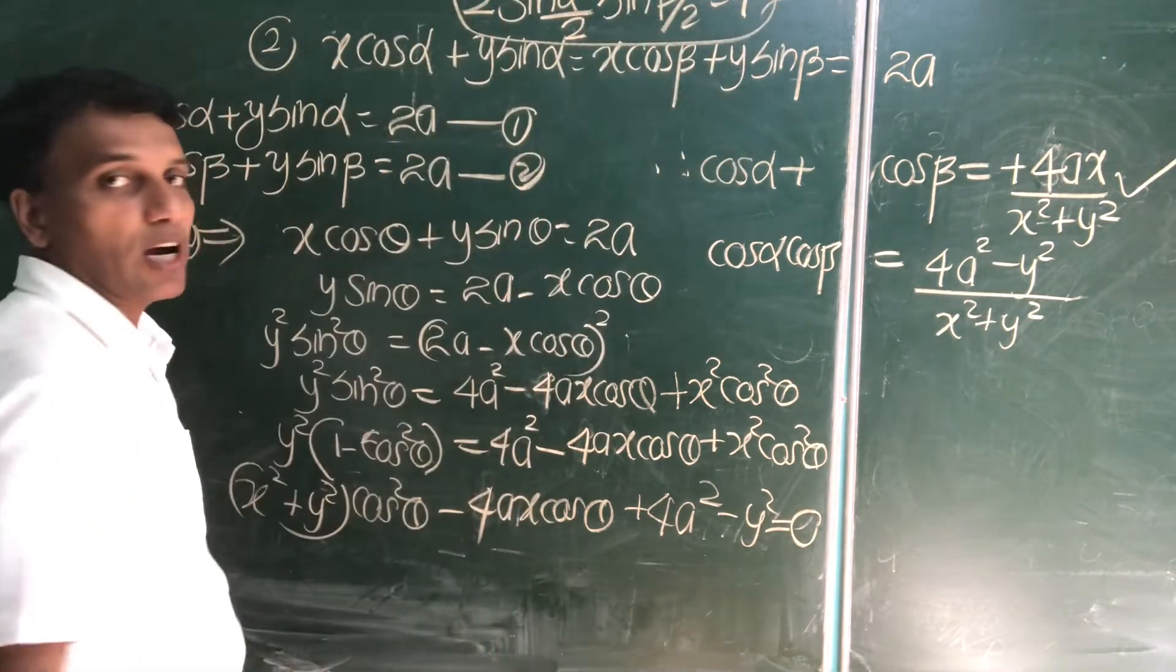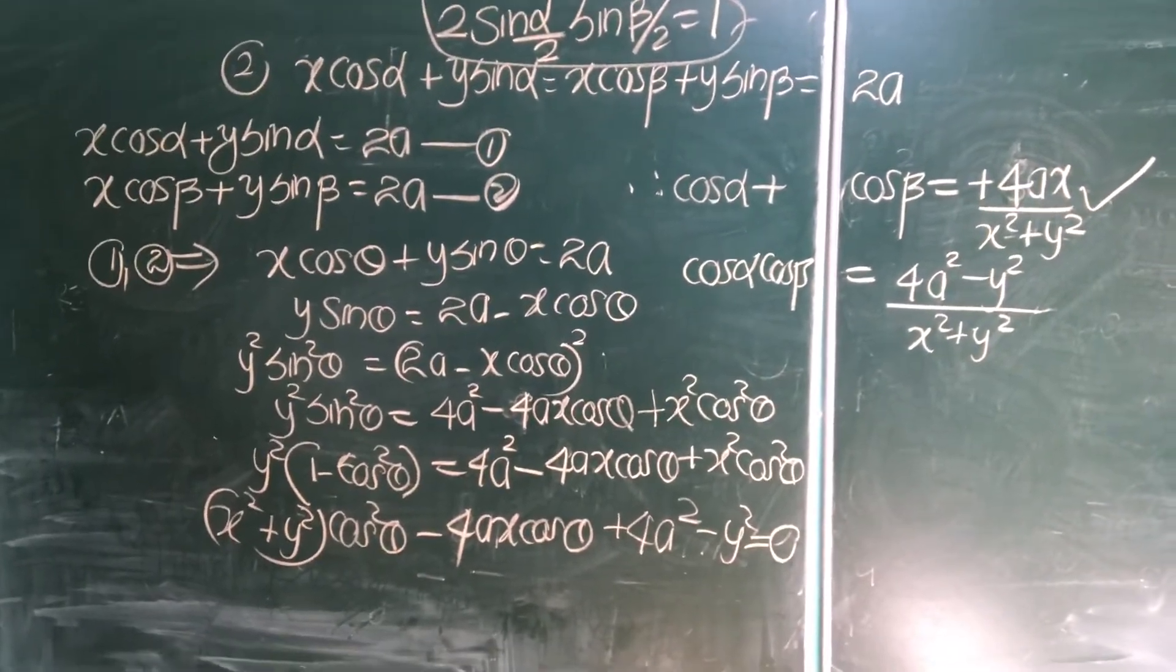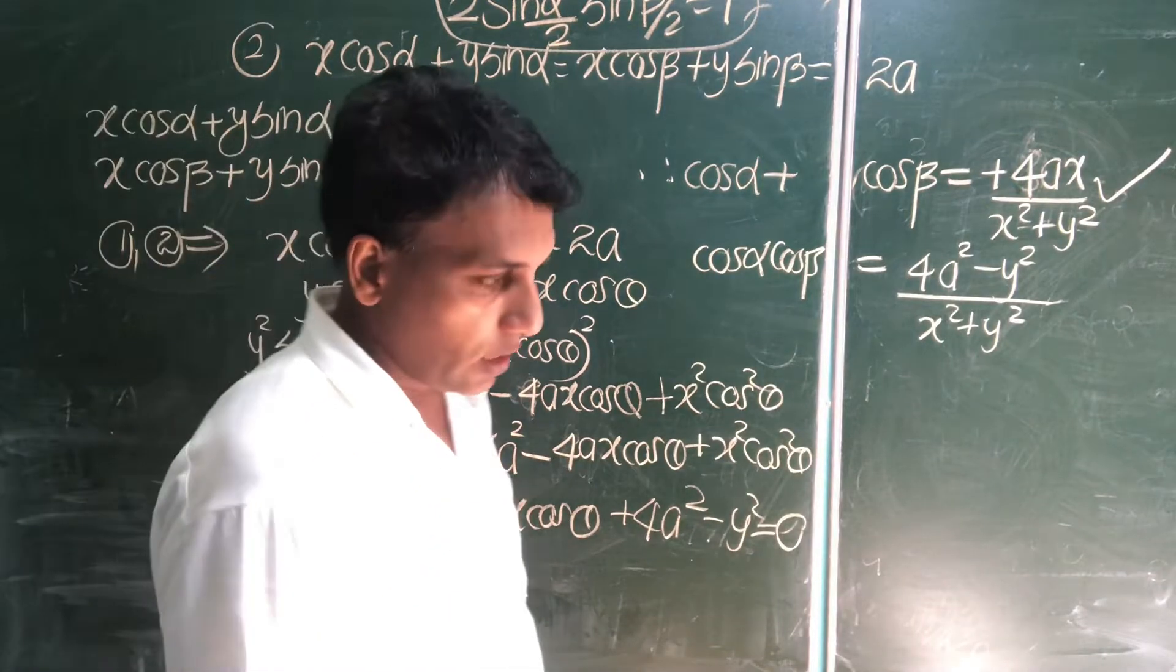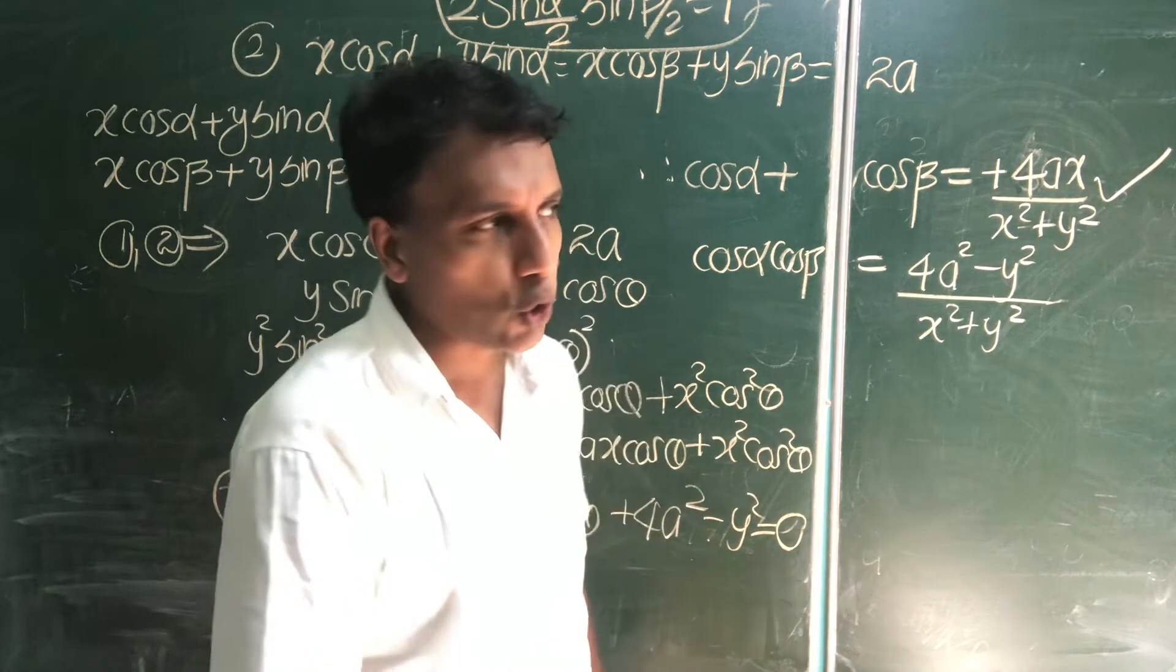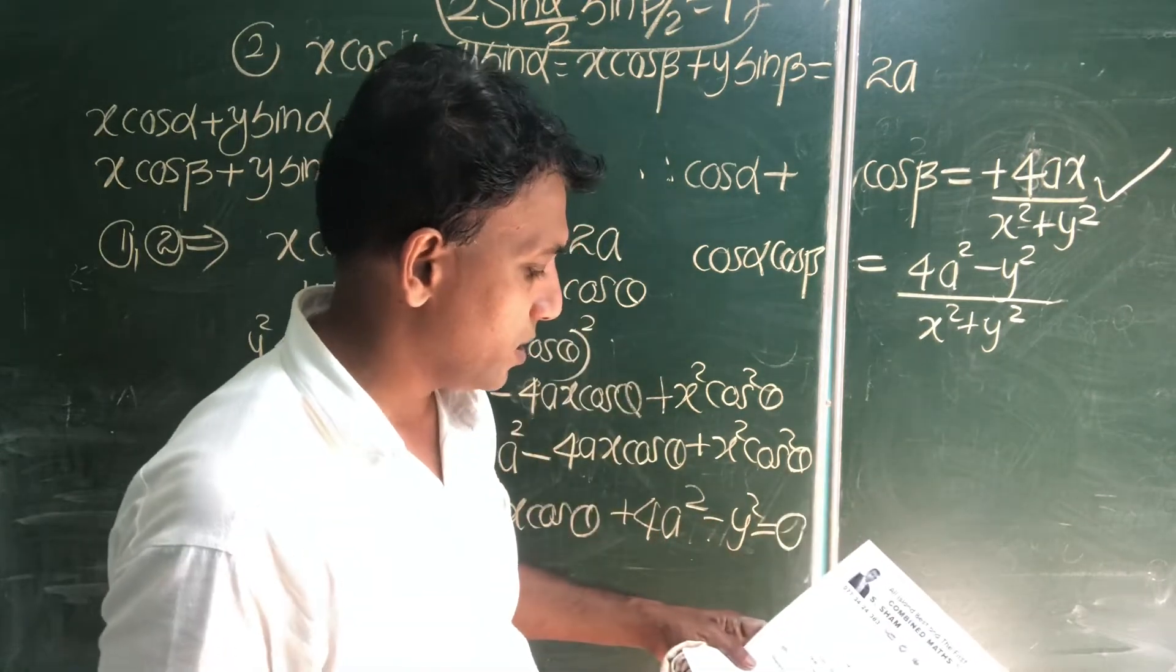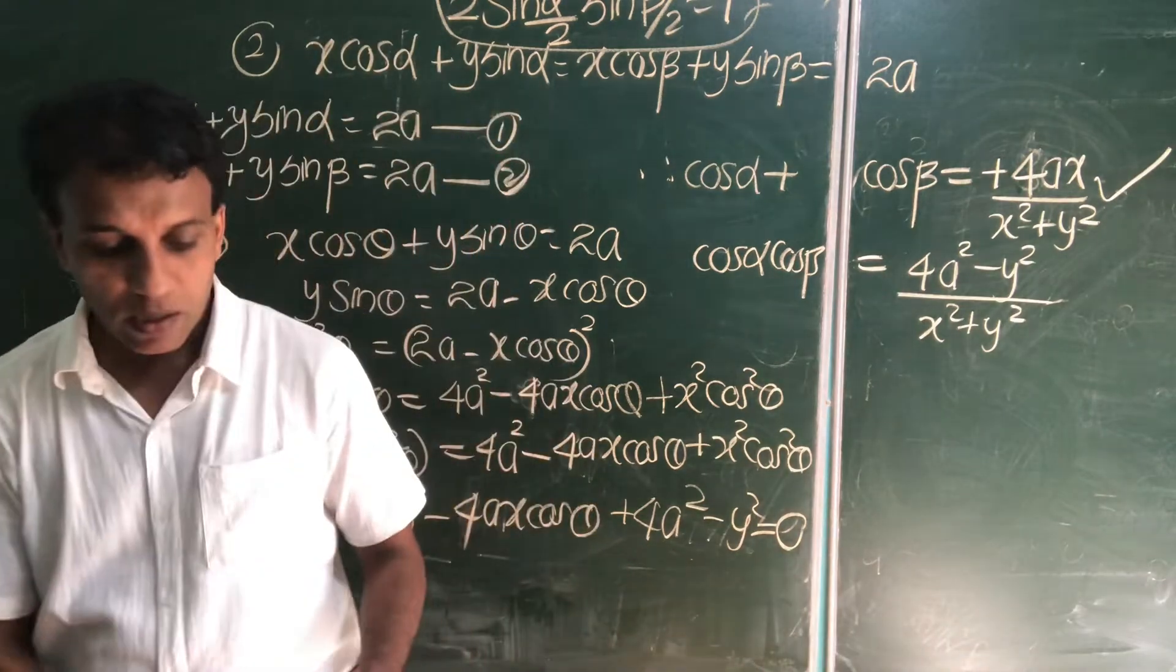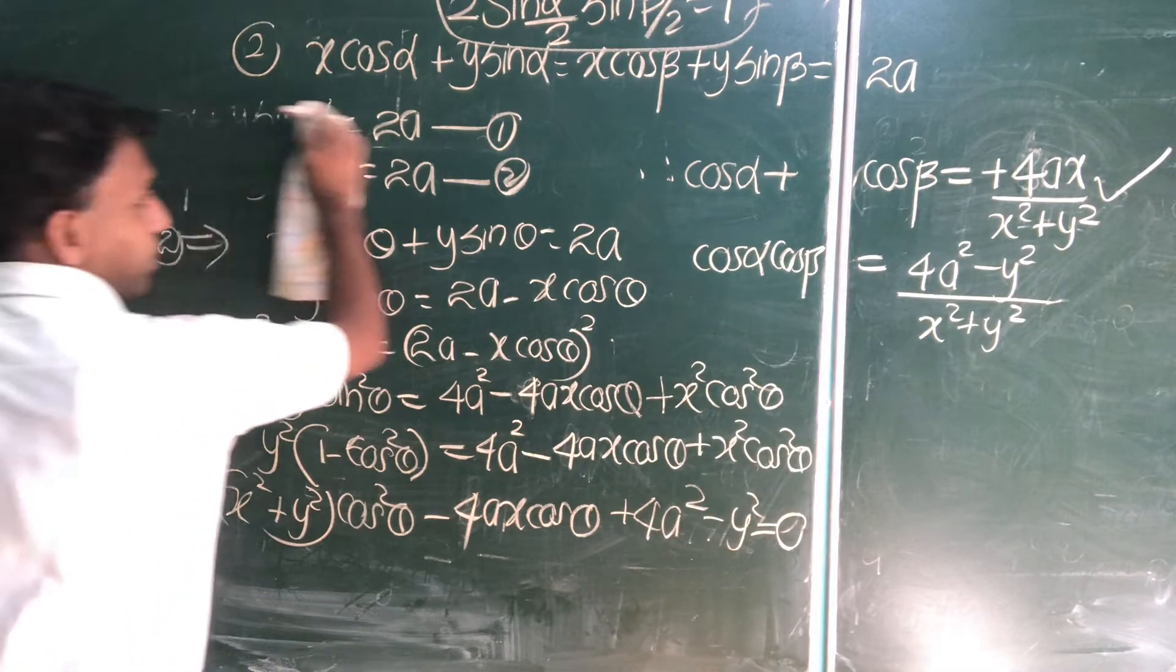2 sin alpha by 2, sin beta by 2 equal to 1. Now, we consider that equation and try to show the second and the first answer, first and the second part, right? Revision problem number 2, second question.